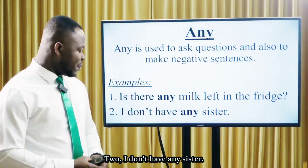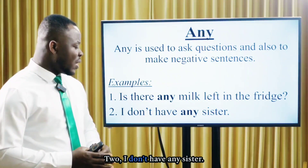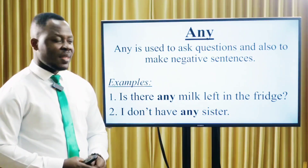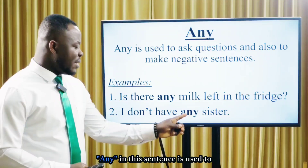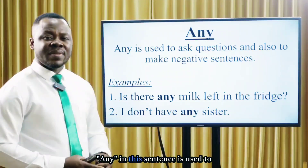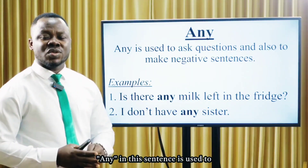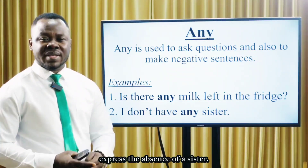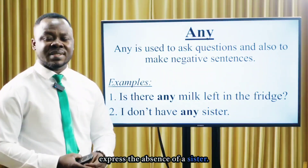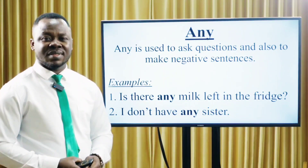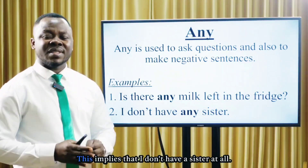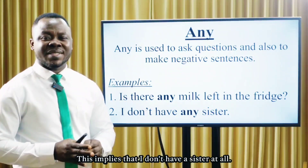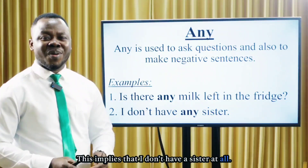Two: I don't have any sister. 'Any' in this sentence is used to express the absence of a sister. This implies that I don't have a sister at all.